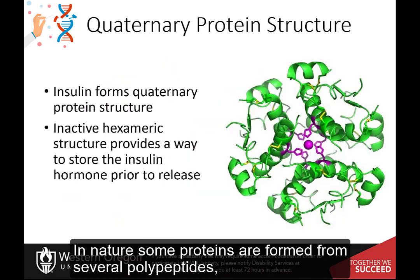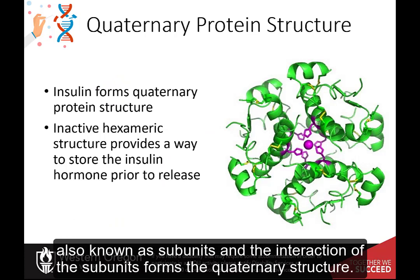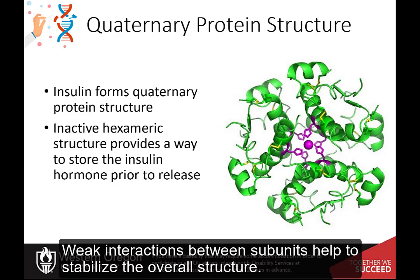In nature, some proteins are formed from several polypeptides, also known as subunits, and the interaction of these subunits forms the quaternary structure. Weak interactions between subunits help to stabilize the overall structure.